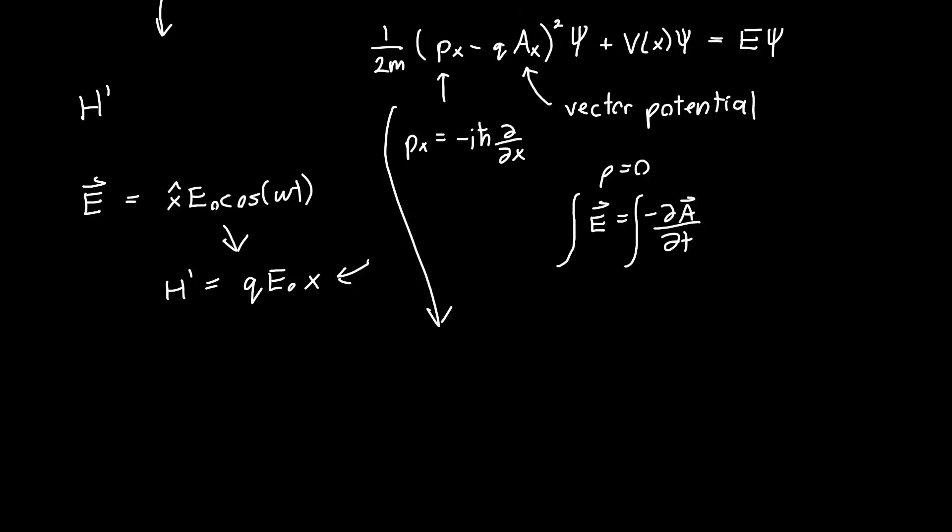So if we expand this equation, we don't even need to make any assumptions here. We'll get pₓ²/(2m) - qpₓAₓ/m - q²Aₓ²/(2m) + V(x), and then this all multiplied by ψ is equal to Eψ.